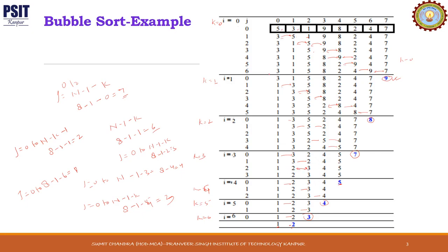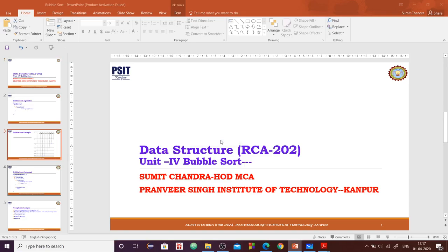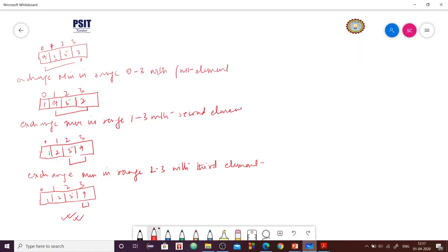As you can see, in the first pass we have total n elements. Then we worked on n minus 1 elements. Then n minus 2 elements, then n minus 3 elements, and so on. This is how bubble sort works. Let's understand once again clearly with the help of an example.